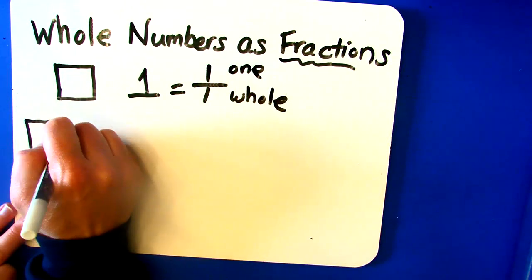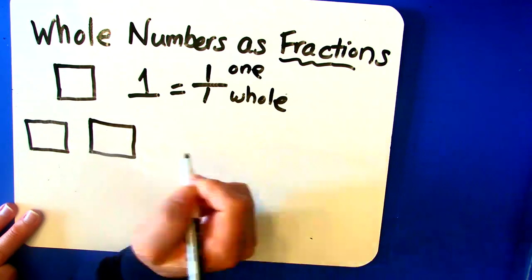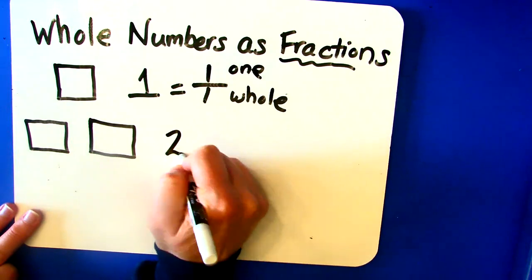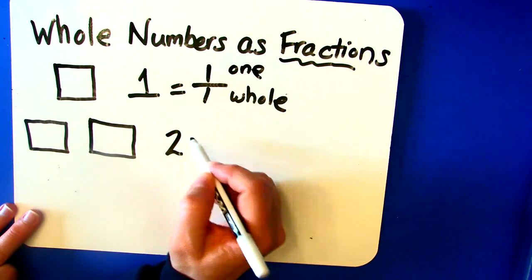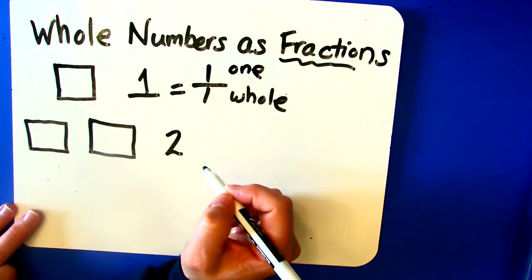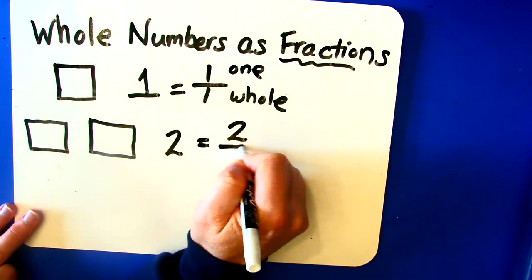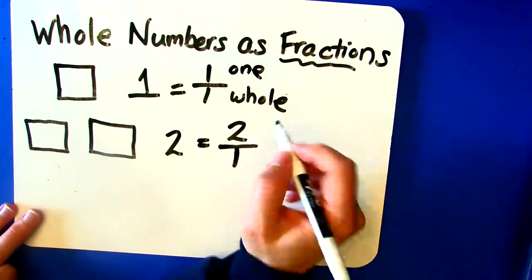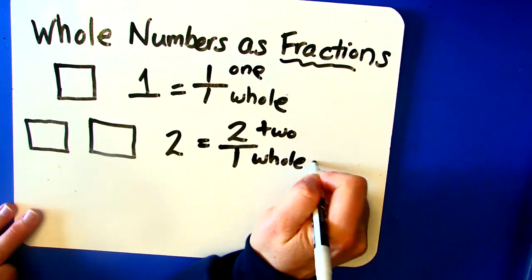I'm going to do the same thing now, except I'm going to draw two squares. So if I ask you to count the squares, you would all easily tell me there are two squares there. I'd like to tell you that you can write two, the number two, as a fraction. It can be expressed as a fraction with one as the denominator. When you see this, you say 'two wholes.' Because that's what this fraction represents.